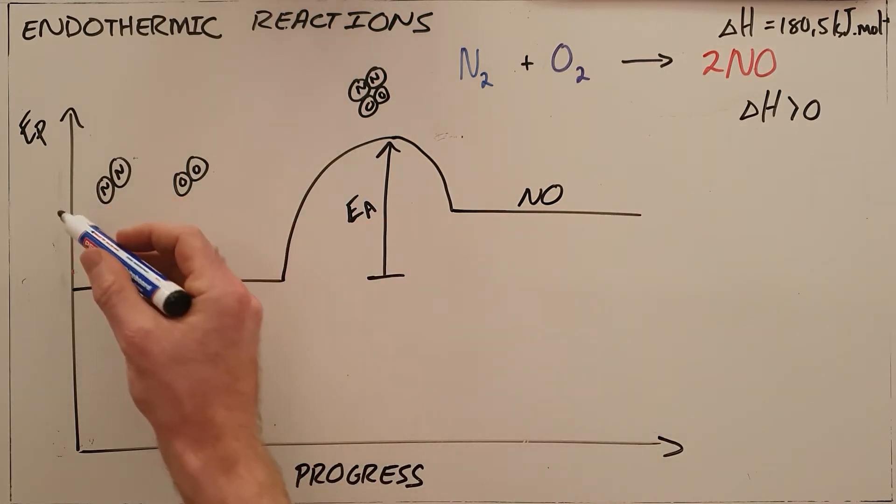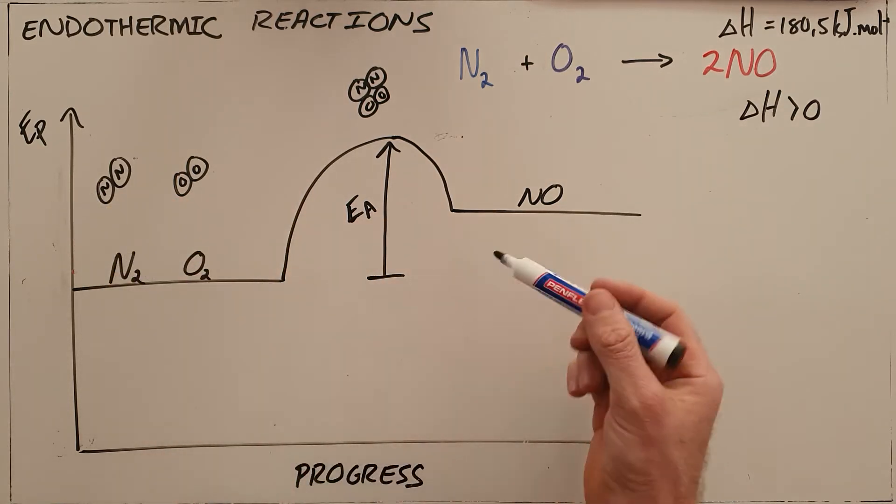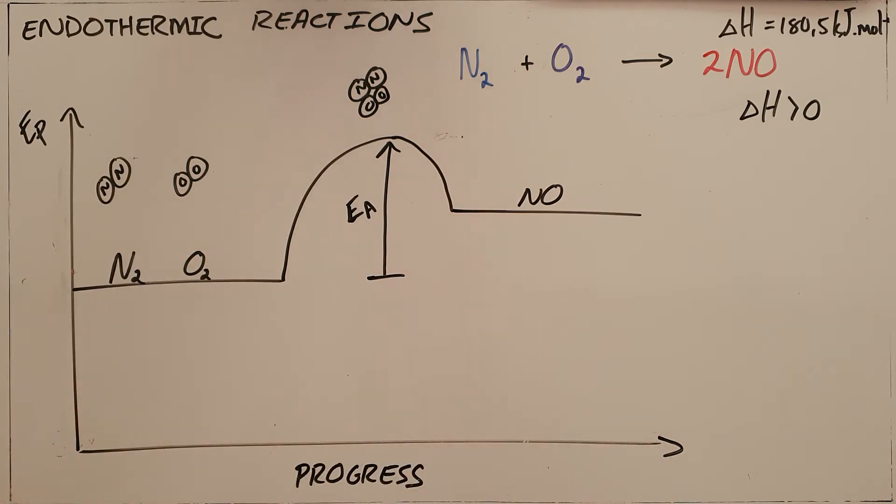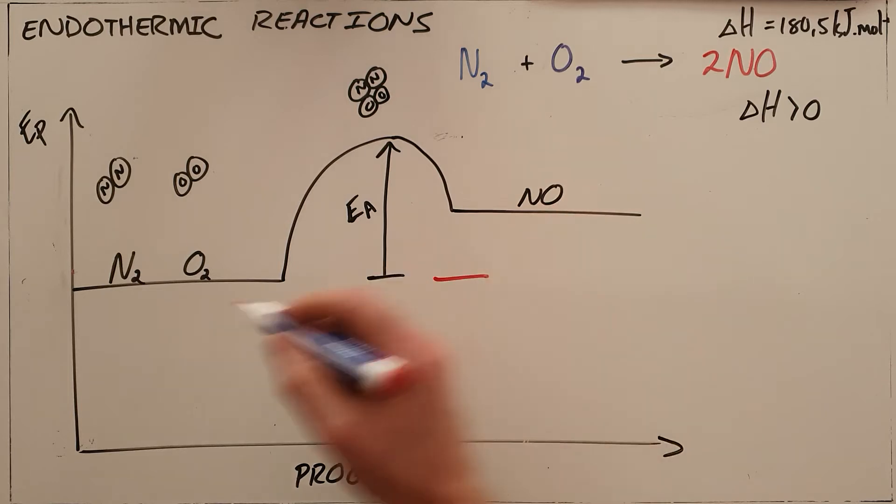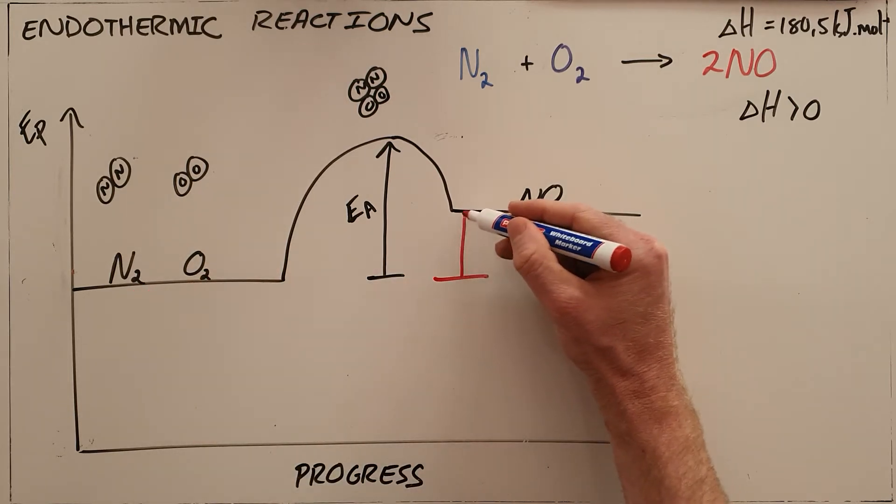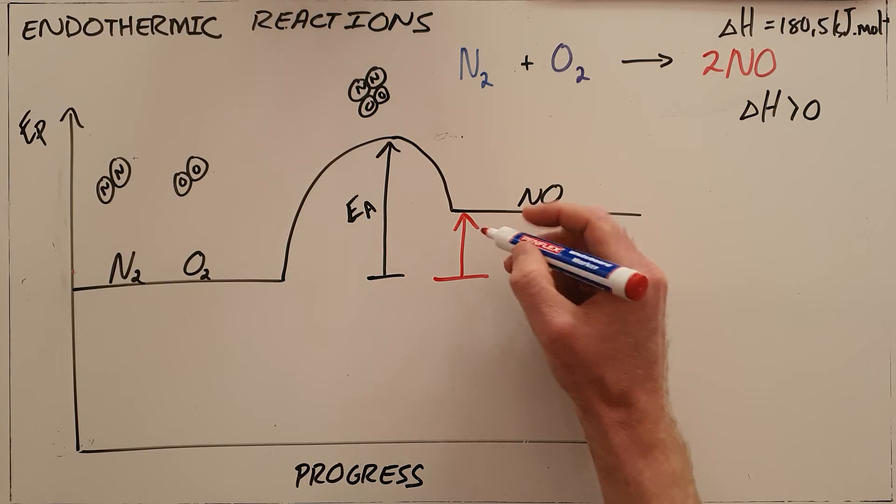What this means is that there is energy that needs to be absorbed in order for us to go from our reactants to the products. A certain amount of energy is required. We call that the enthalpy.